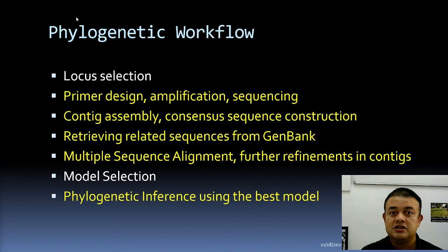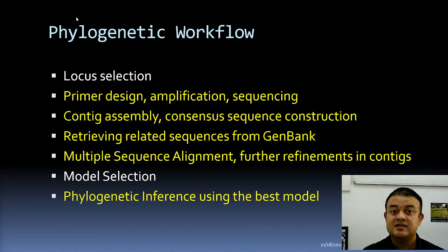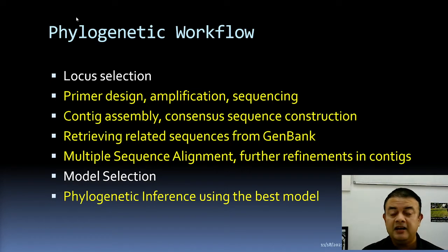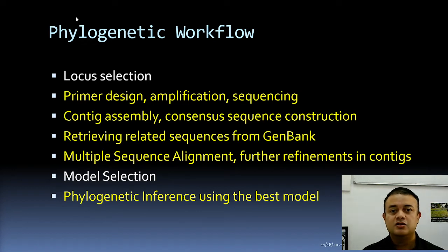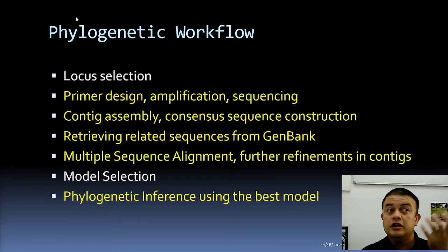The real analysis starts with selection of the nucleotide substitution model. A model is essentially a mathematical equation that best explains the data — and our data is the multiple sequence alignment. We have multiple equations; choosing which one to use is like regression analysis: which regression equation should I choose? This process is called model testing or model selection.